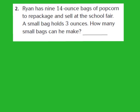Let's take a look at question number 2. We have a word problem, so my first step is going to be to read it. Problem 2 says: Ryan has 9 fourteen-ounce bags of popcorn to repackage and sell at the school fair. A small bag holds 3 ounces. How many small bags can he make? I know that Ryan has 9 fourteen-ounce bags of popcorn, so I need to multiply 14 by 9 to find the total ounces.